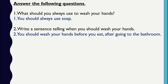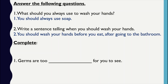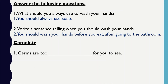Question B: complete the sentence. Number one — germs are too... for you to see. Let's go back to the text; you'll find it in the first paragraph, line number seven. So the answer is: germs are too small for you to see.